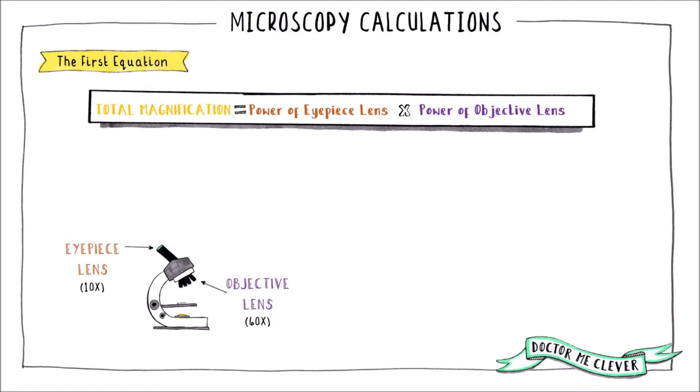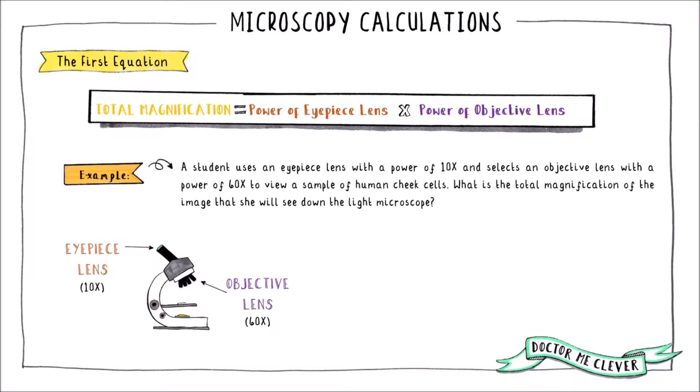Take this question for example: a student uses an eyepiece lens with a power of 10x and selects an objective lens with a power of 60x to view a sample of human cheek cells. What is the total magnification of the image that she will see down the microscope?